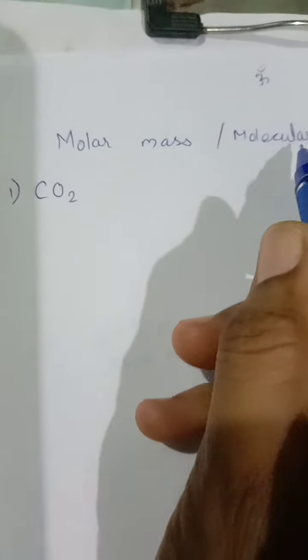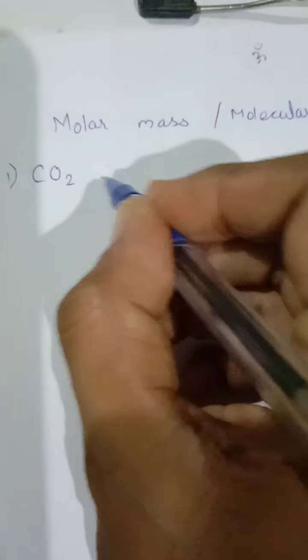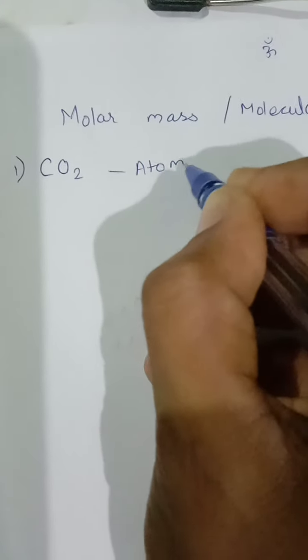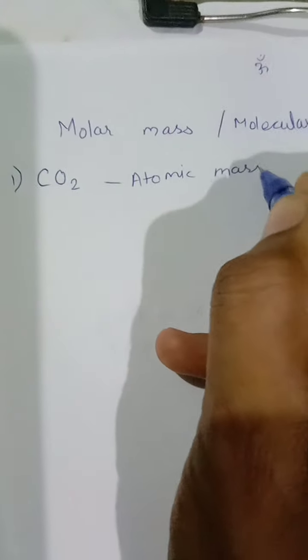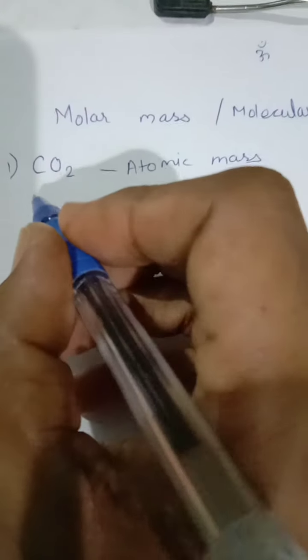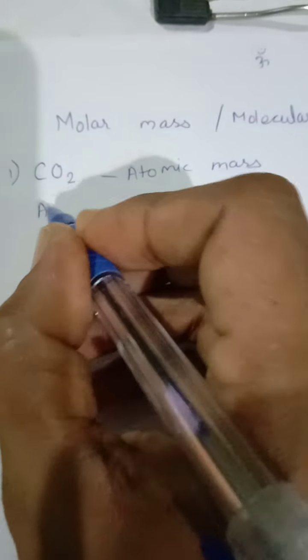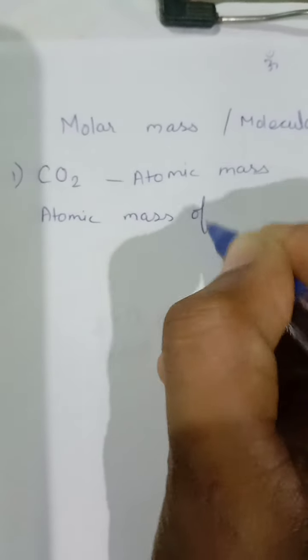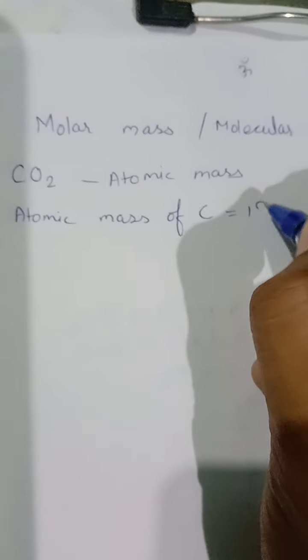For calculating molar mass or molecular mass, you should know the atomic mass. First, the atomic mass of carbon is 12.